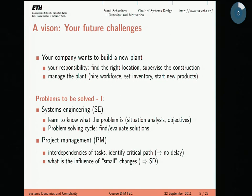The first problem comes from the systems engineering perspective — the predecessor of this course. It's mostly practically oriented: situation analysis, what is the problem, what do we want to achieve, what are the objectives. For this we are going to use the problem solving cycle — a framework for structuring this kind of thinking. The first two lectures are only on the problem solving cycle. Next task is project management — once you've selected your plant location and start building, you need to supervise the project and the implementation of your solution. We're going to use concepts like critical path, identifying the optimal sequence of tasks.